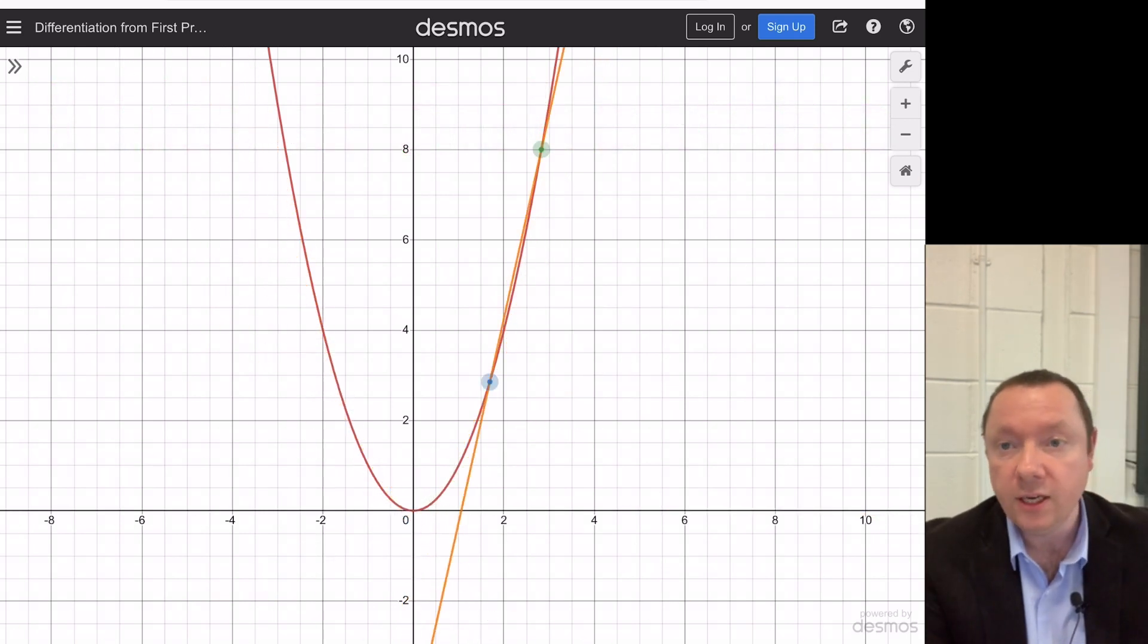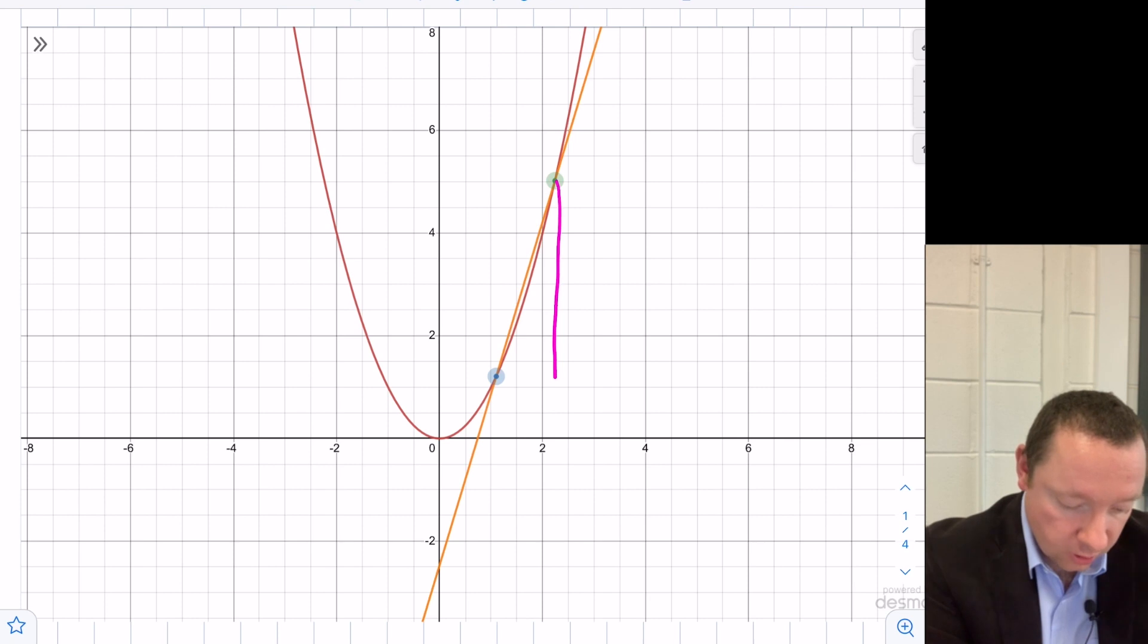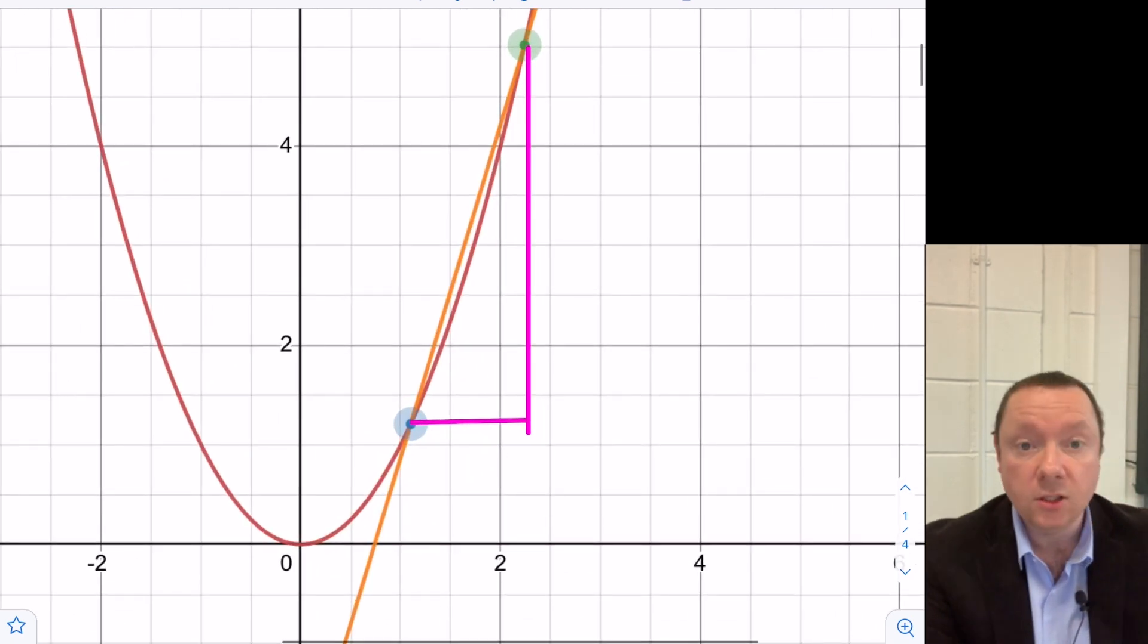We can think of differentiation as like the gradient. So taking these two points and showing you that you can essentially make a triangle here by joining up here and you should know that the gradient is defined as the vertical distance over the horizontal.